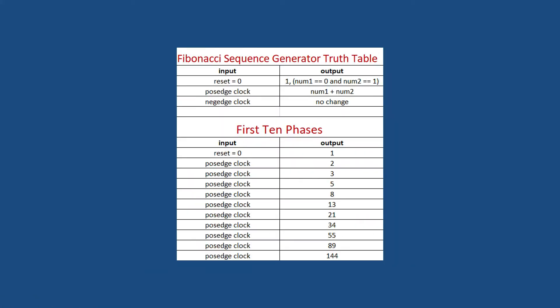And so this is the best I can do for a truth table because in a truth table and digital logic, you have your inputs and your outputs. So for this particular circuit, the inputs are clock and reset. So when reset goes to zero because we're operating on a negedge, we're setting the register num1 to zero and num2 to one. So the output will be one. The output is always going to be num1 plus num2.